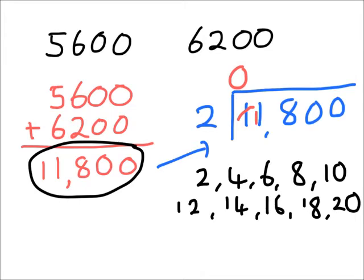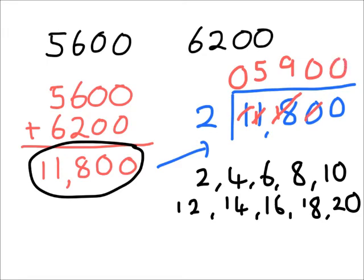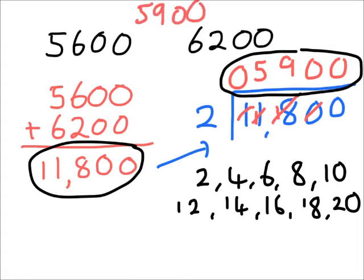How many twos are in eleven? One times two, two times two, three times two, four times two, five times two — five twos are ten. Continuing: six times two, seven times two, eight times two, nine times two — nine twos are eighteen exactly, with none left over. How many twos are in zero? None. Half of eleven thousand eight hundred is five thousand nine hundred — that's your middle value.